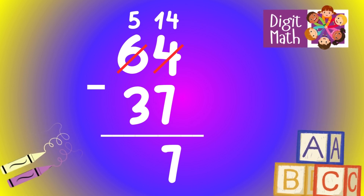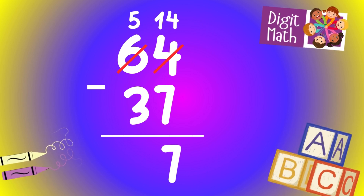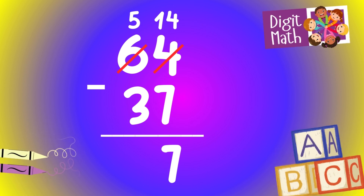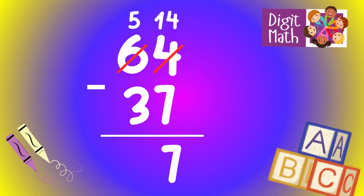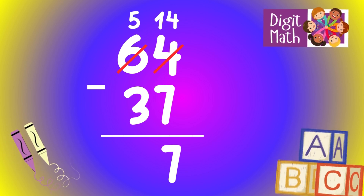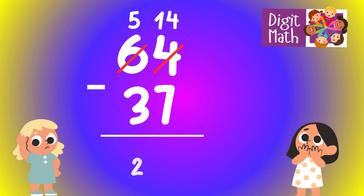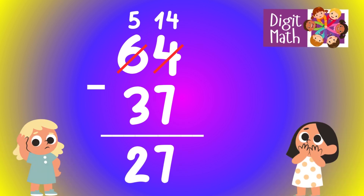Thus, the final result is 64 minus 37 equals 27.